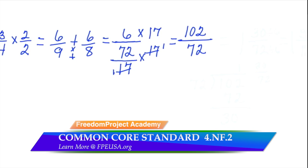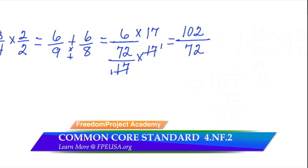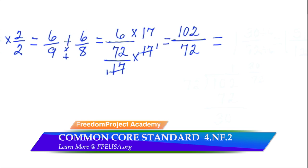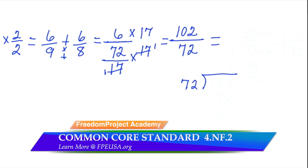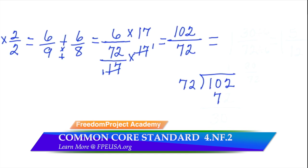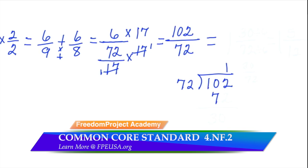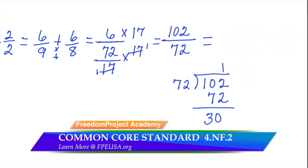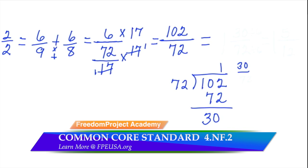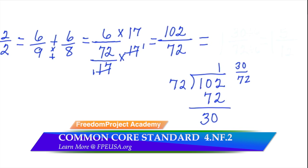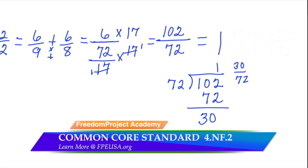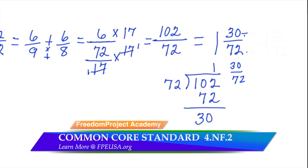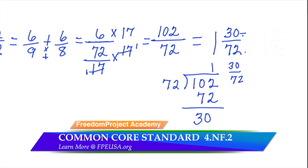With 102 over 72, that again is an improper fraction. 72 goes into 102 one time, leaving 30 as a remainder. So we make that a fractional remainder, 30 over 72. But we're not yet finished, because we must simplify 30 over 72. It is not in its simplest form.